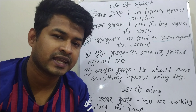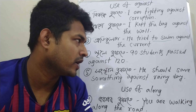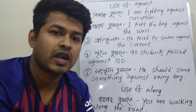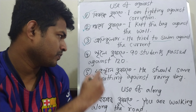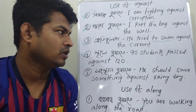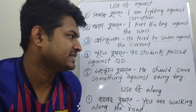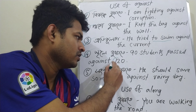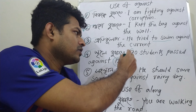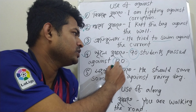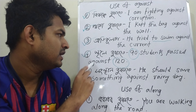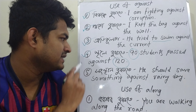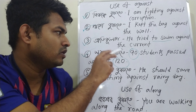We are going to use 'against' as an infinitive. He tried to swim against the current. This is the second use. Like, 90 students passed against 120.